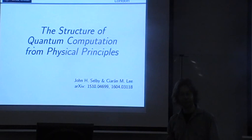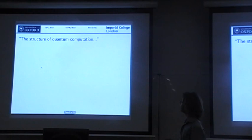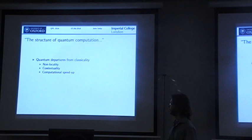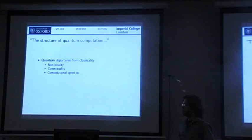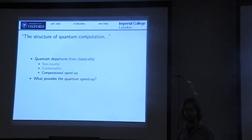What I'm going to do is try and motivate why we should be interested in these things and what exactly I mean by this title. The structure of computation is a really important part of the foundations of quantum theory, because it's one of the three key areas where there's a real departure in quantum theory from classical physics, the other two being non-locality and contextuality. The first two are very well studied, but really trying to understand where this computational speedup comes from is a bit overlooked.